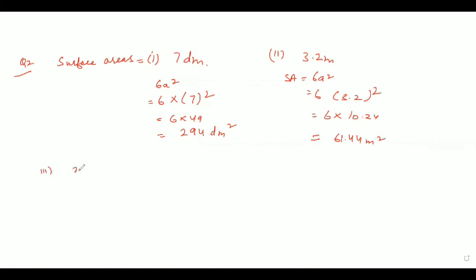Third part is given as 2.5 centimeter. So again, surface area equal to 6a square, means 6 into 2.5 square. So 6 into 2.5 square is 6.25, so answer will be coming out as 37.5 centimeter square. So these are the answers of all the parts of question number 2. Hope question number 2 is clear.